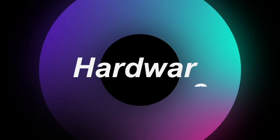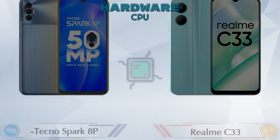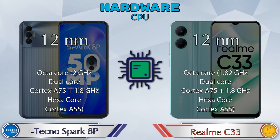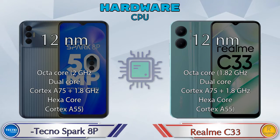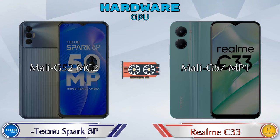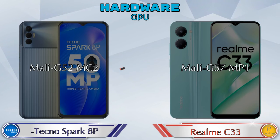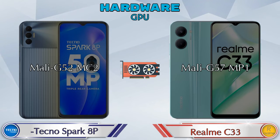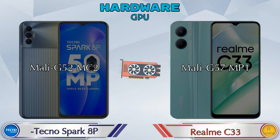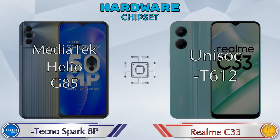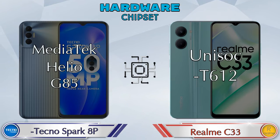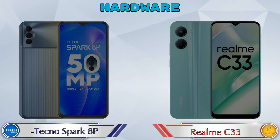First we talk about the most important part of the phone: hardware. Looking at the GPU, the Mali G52 MC2 is available in Spark 8P and Mali G57 MP1 is available in Realme C33. For the chipset, Spark 8P has MediaTek Helio G85 and Realme C33 has Unisoc T612.